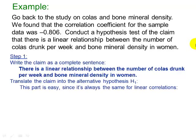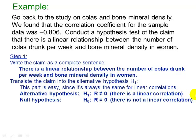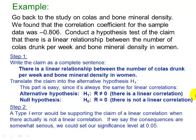This part is easy because it's always going to be the same. Our alternative hypothesis is that R is not equal to zero, or in words: there is a linear correlation. Our null hypothesis is that R is equal to zero — there is not a linear correlation. For step two, a type one error here would be supporting the claim of a linear correlation when there actually is not one. Since the consequences in this case are somewhat serious, we set our significance level at 0.05.